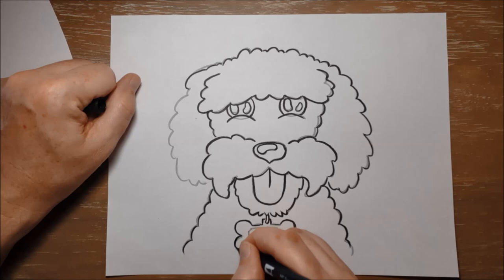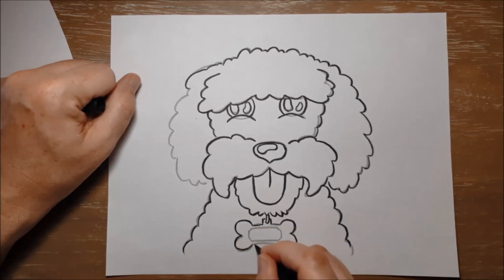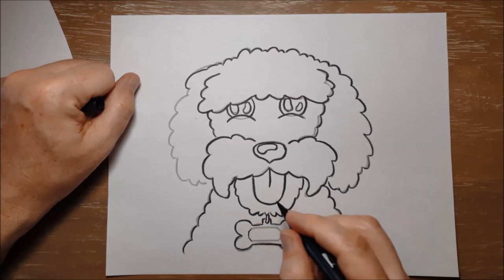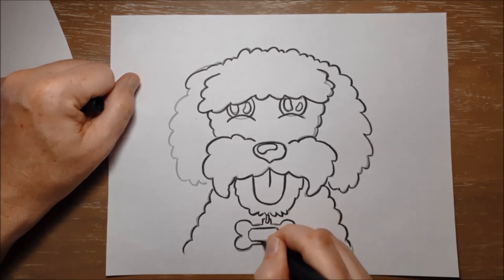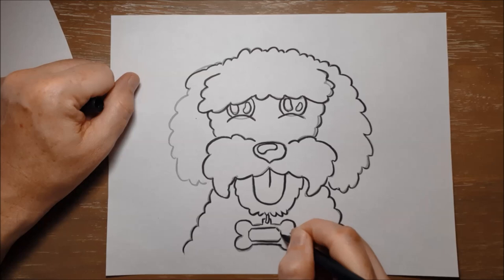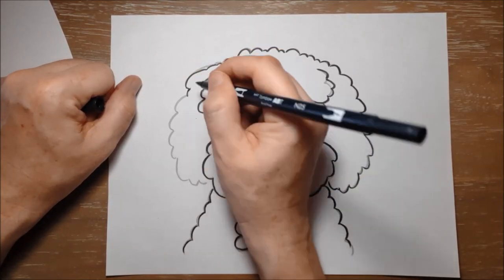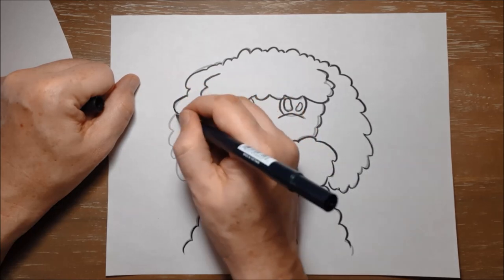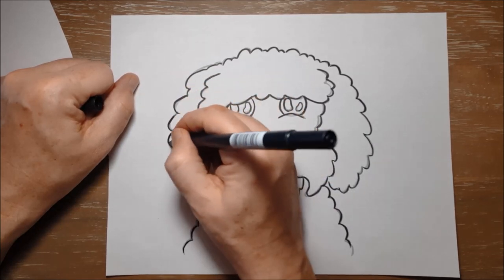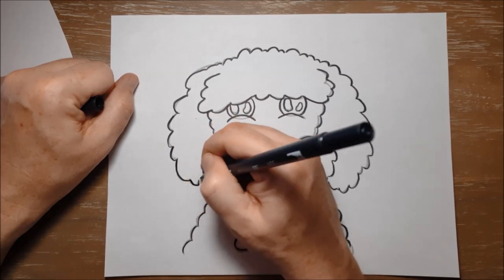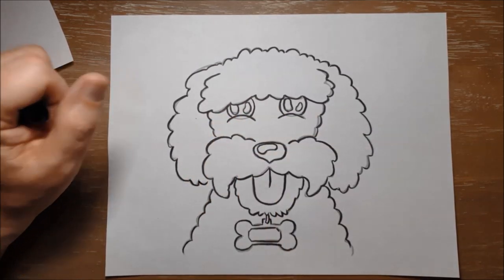But Bridget sent me a message asking if we could draw a picture of her aunt's Bernadoodle, Lola, so that she could give it to her aunt for nurses week. And so I thought that was a great idea. And I had never drawn a Bernadoodle before. And so she sent me a picture of Lola. And I've done my best here to draw it. And hopefully Bridget will like this and it will turn out well for her too.